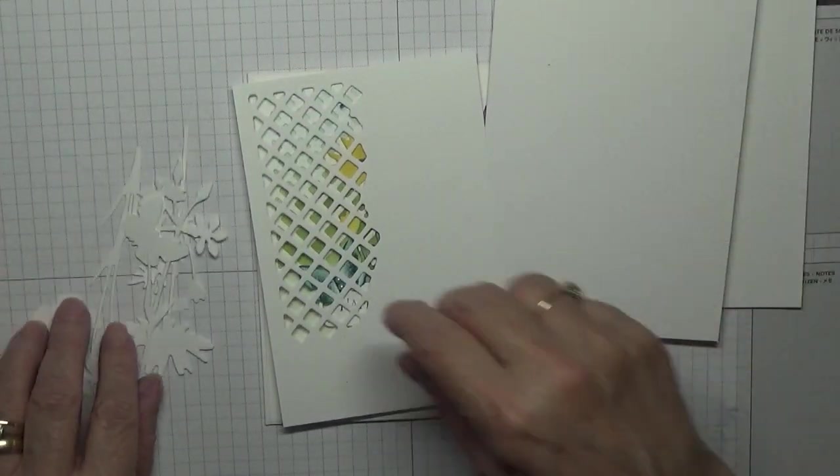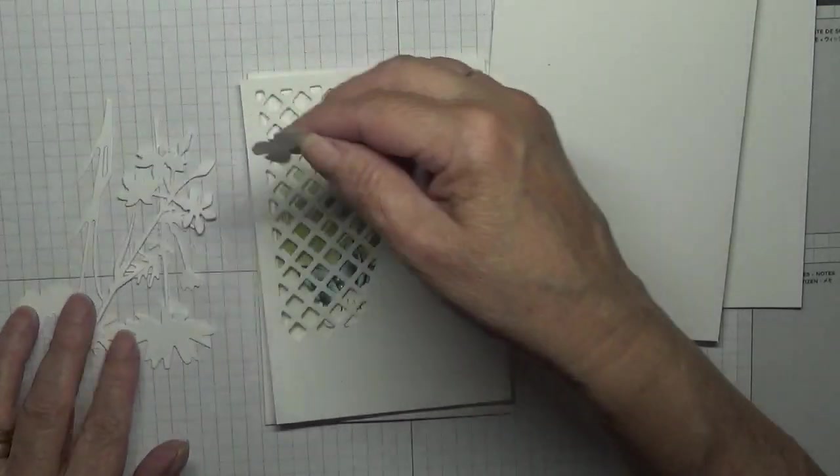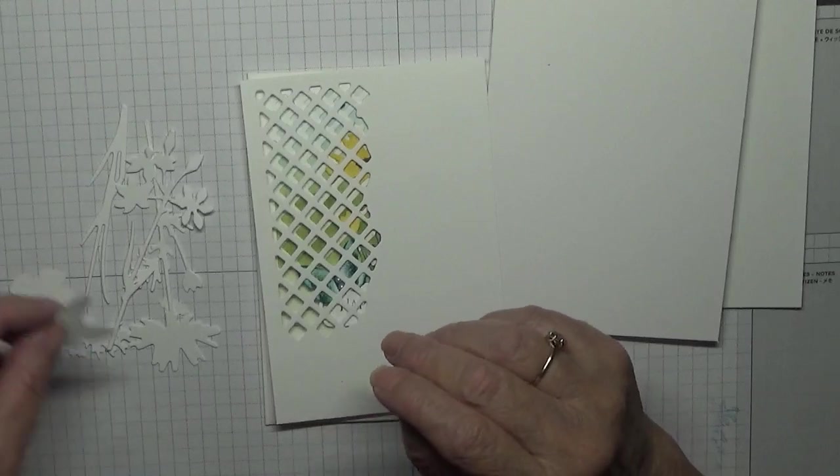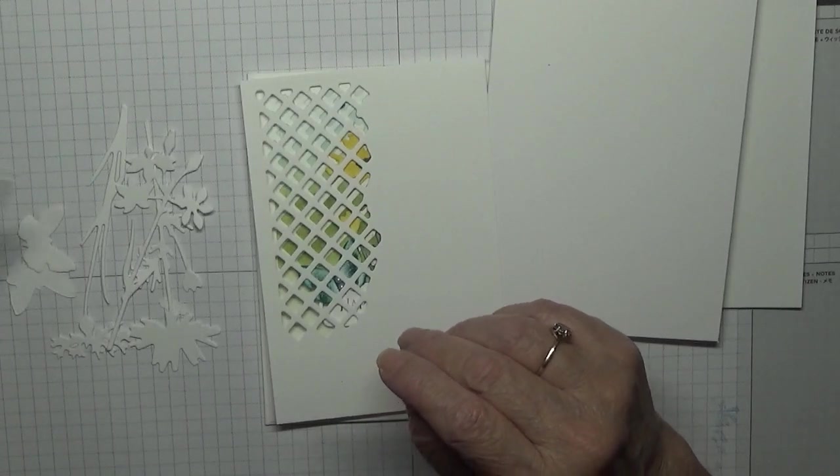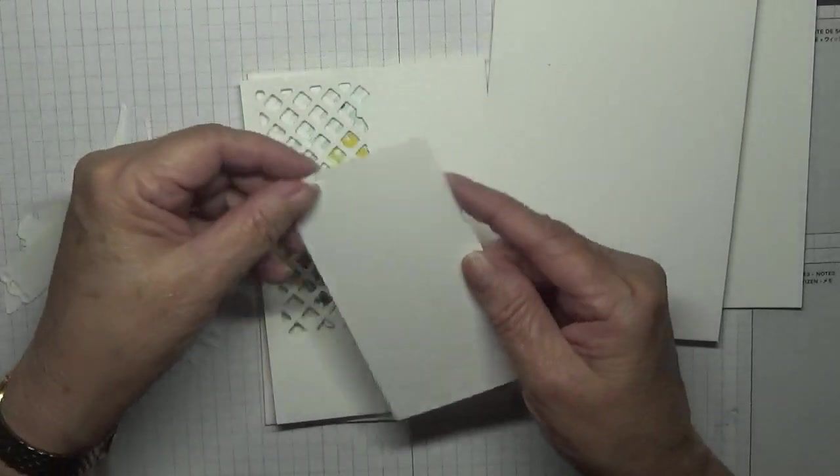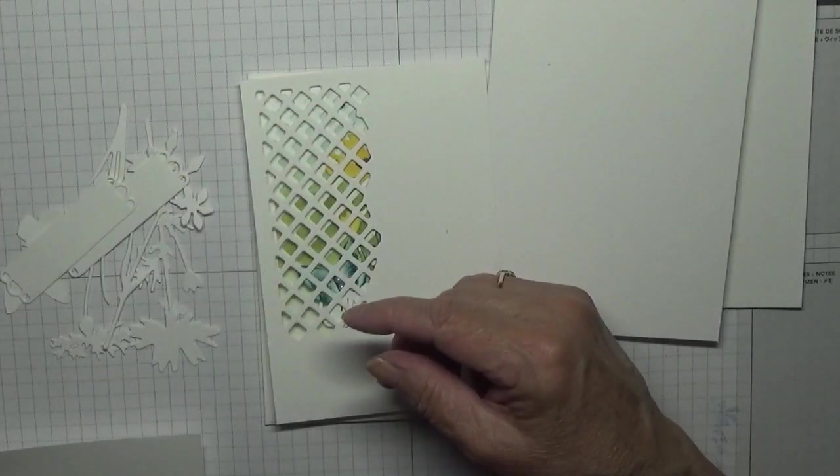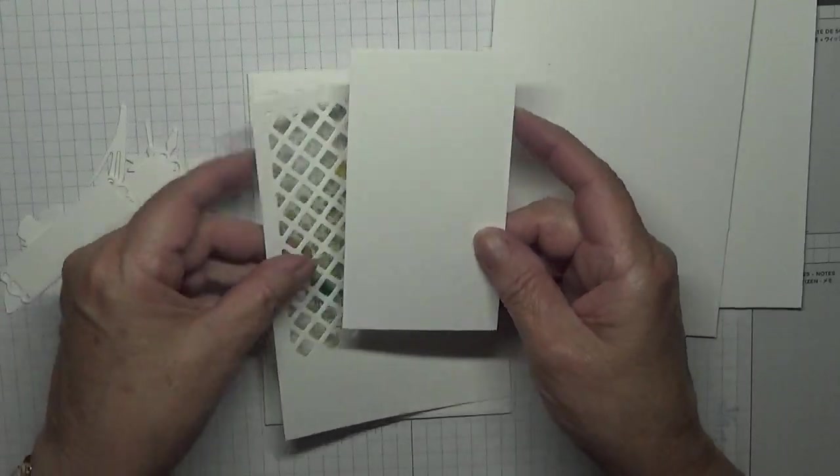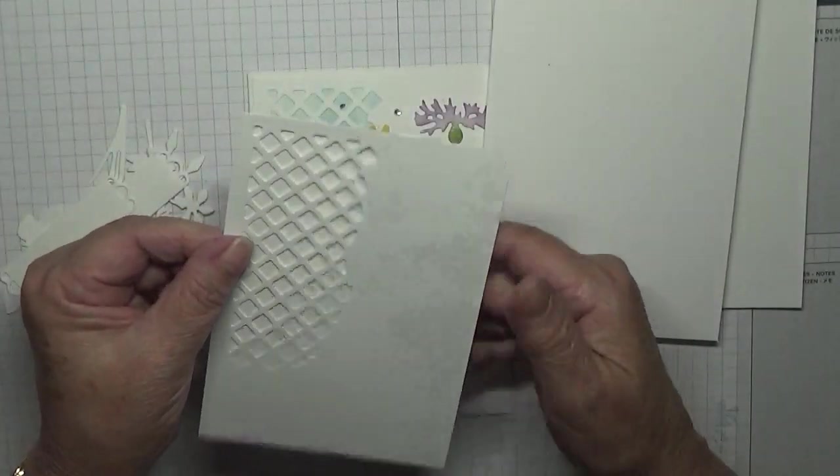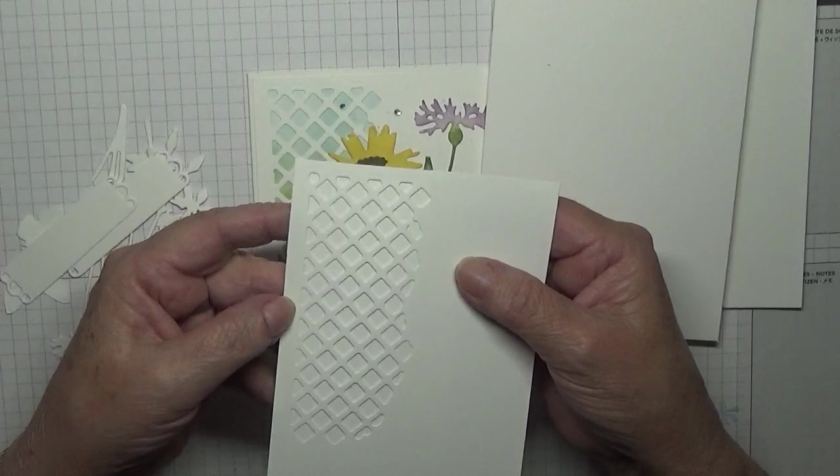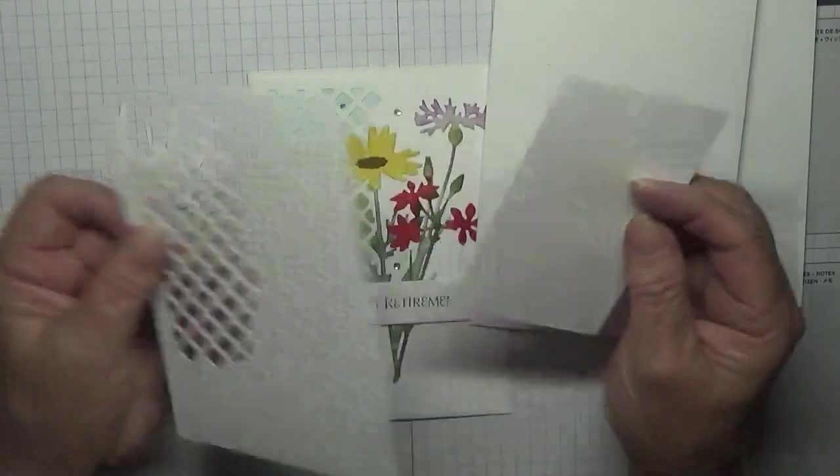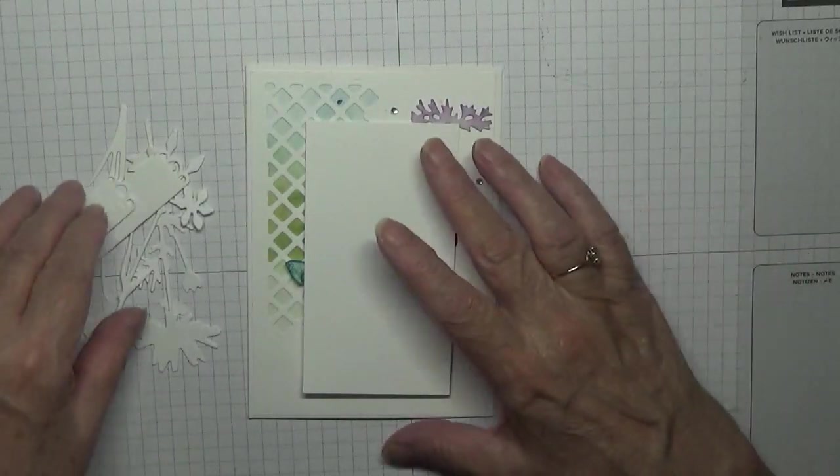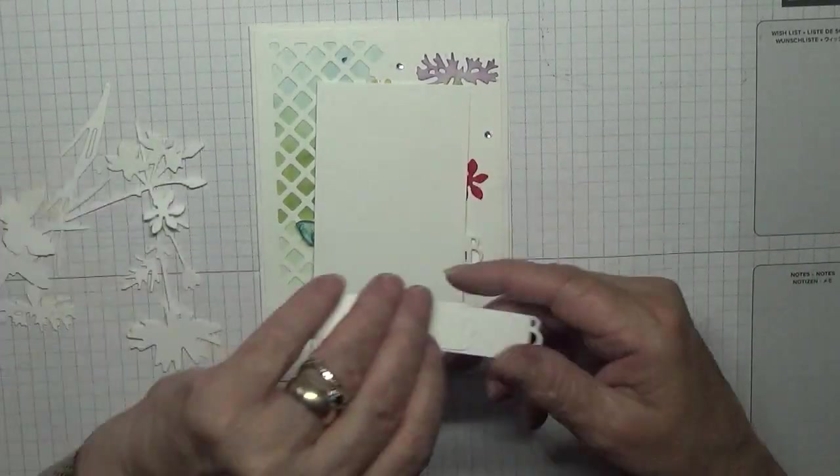And these are my flowers or wildflowers and a couple of butterflies, a couple of tags. And I've also got a piece that measures four and a half by two and a half. And once we've colored that, that will go behind the cut out.